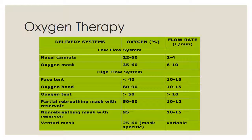Starting with the low-flow system: it is standard hospital procedure to give nasal prong oxygen to patients in need, such as those in respiratory distress, those with low hemoglobin, or those arriving at the emergency department. The nasal prong or nasal cannula delivers 22 to 60 percent oxygen at a flow rate of 2 to 4 liters per minute — the maximum rate through a nasal cannula is 4 liters per minute. The oxygen mask delivers 35 to 60 percent oxygen at 6 to 10 liters per minute.